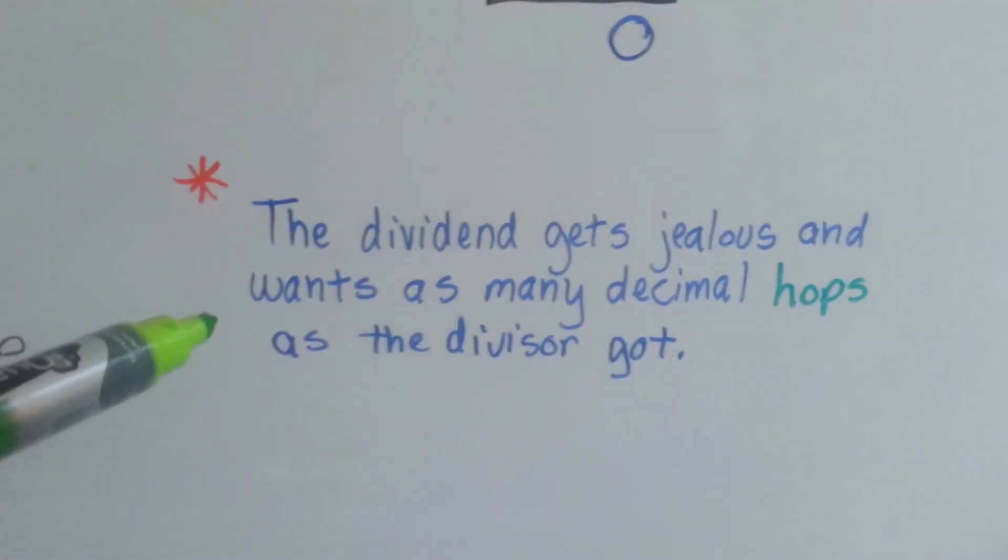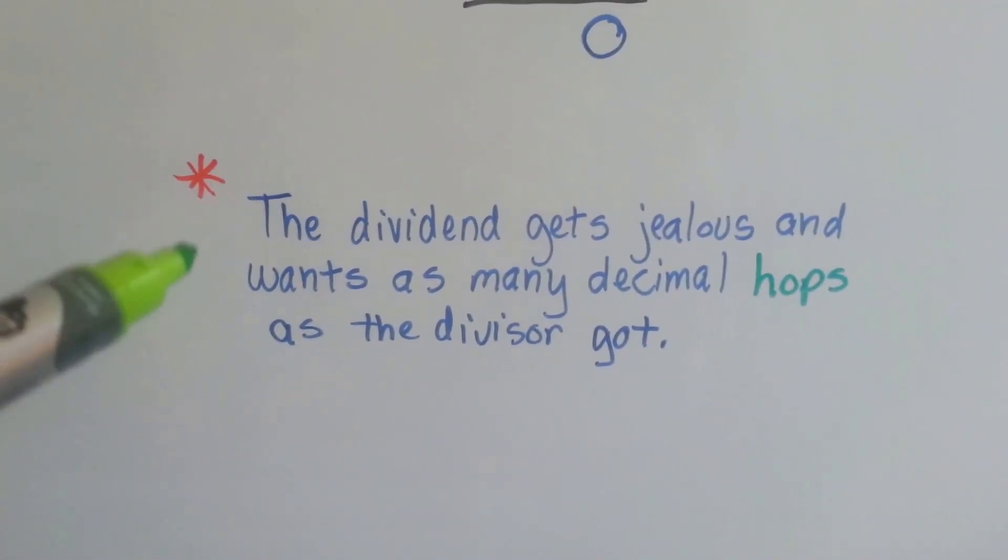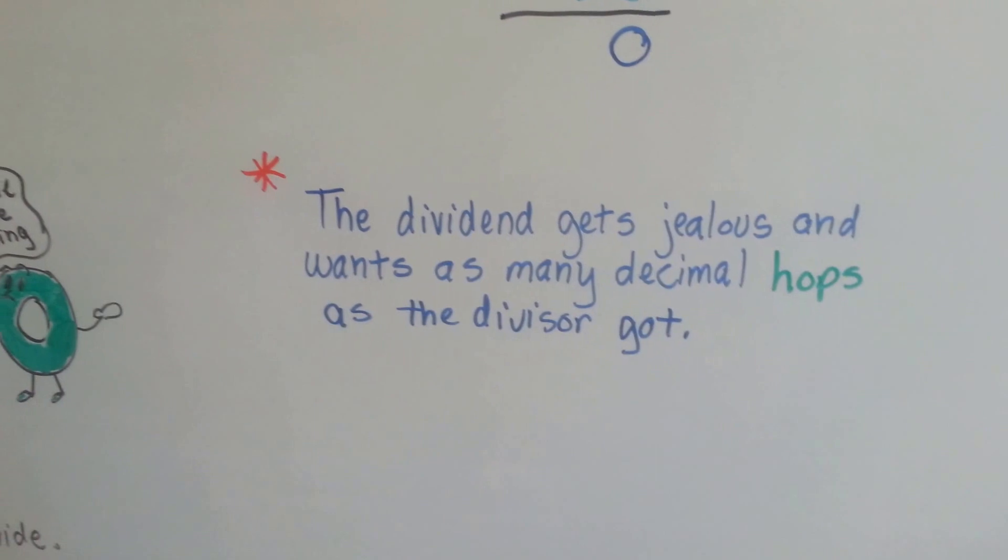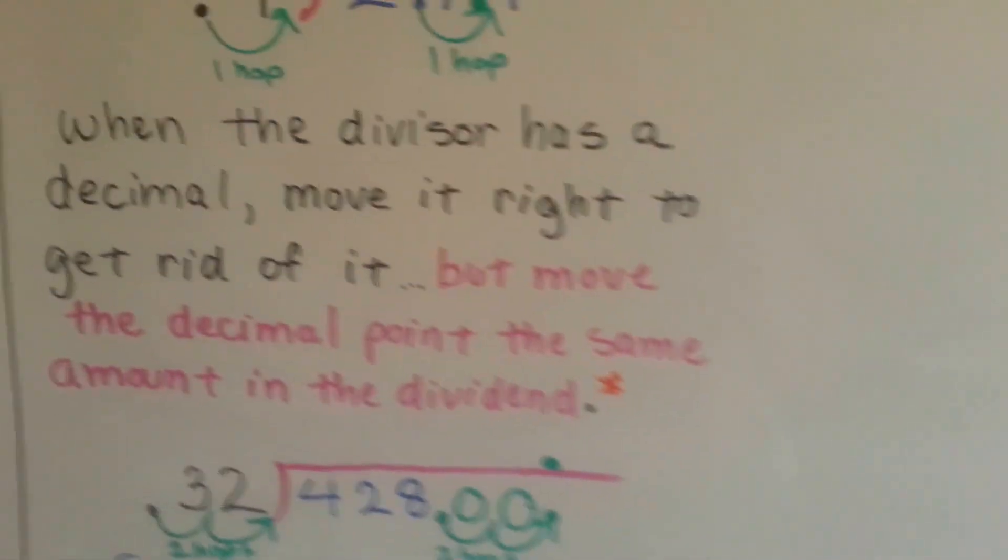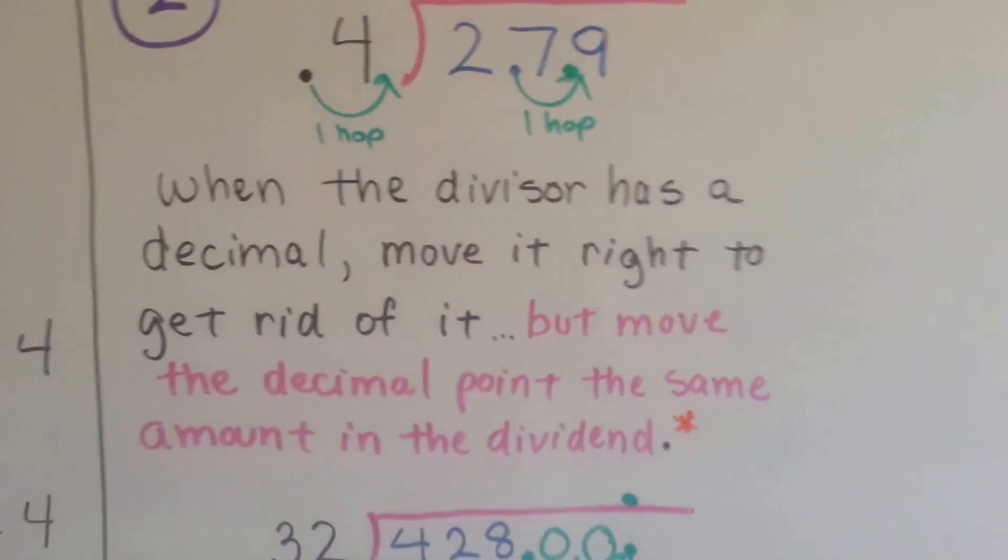The dividend gets jealous and wants as many decimal hops as the divisor got, alright? You have to remember that. You can't just hop the dividend and not the divisor. There's going to be a lot of jealousy and fighting going on, okay? And you'll get a wrong answer.